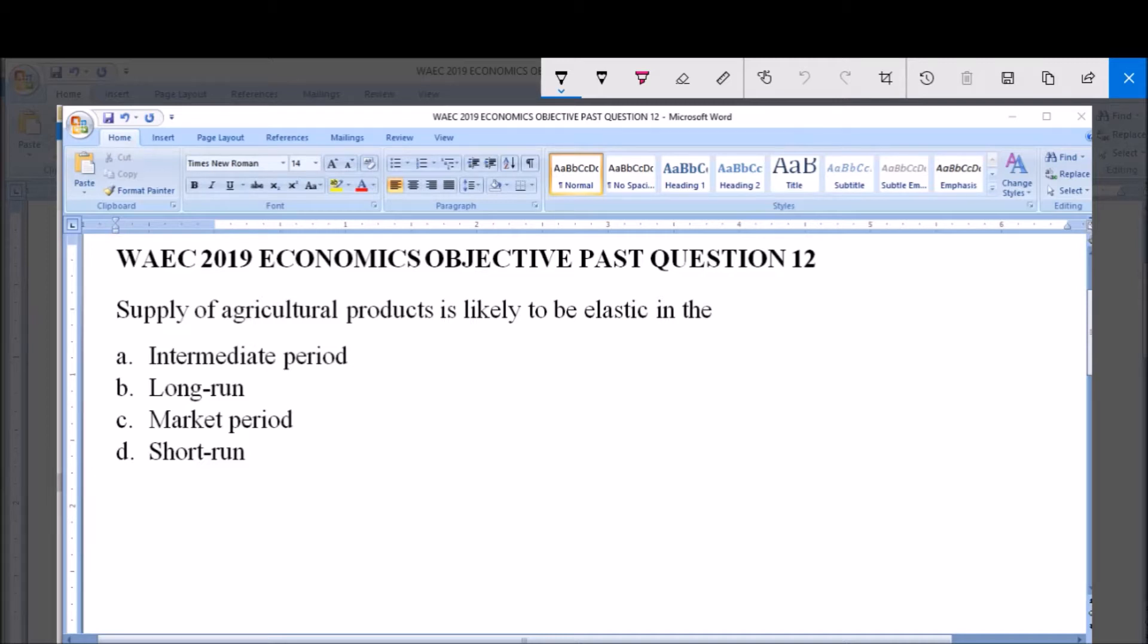The question is: supply of agricultural products is likely to be elastic in the A. Intermediate period, B. Long run, C. Market period, D. Short run.